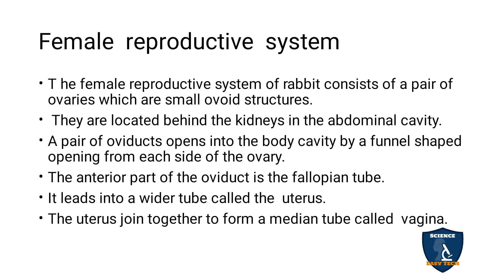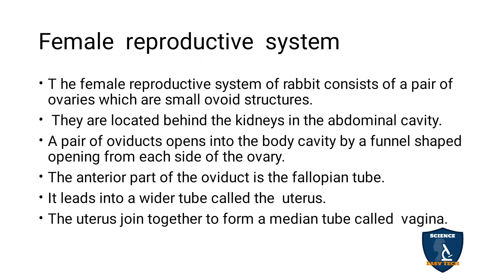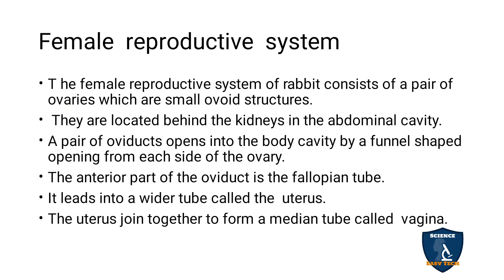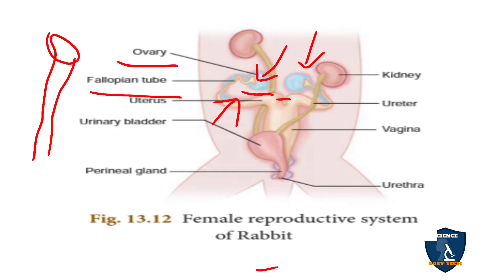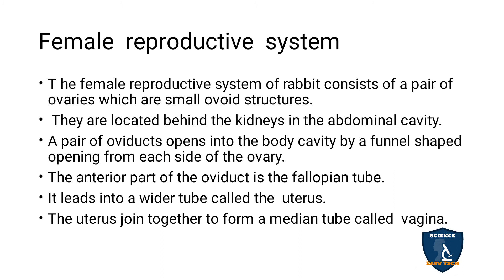The oviduct has a funnel-shaped opening. The anterior part of the oviduct is called the fallopian tube, and it leads to a wider tube called the uterus. The two uteri join together and connect with a tube called the vagina.